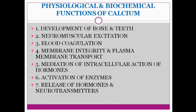Coming to calcium metabolism: the plasma concentration is within the range of 9 to 11 milligram per deciliter. The ionized form of calcium is the biologically active form in the body.